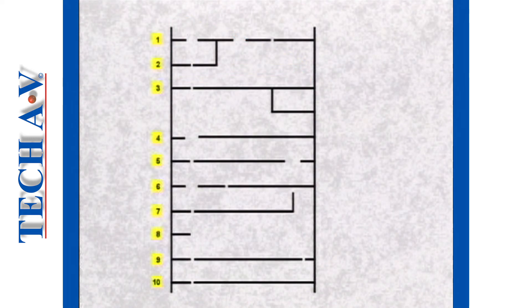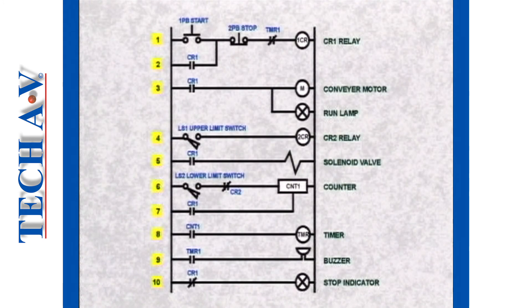These horizontal lines represent the rungs of the ladder, which illustrate how the various devices are wired together. And these symbols identify the devices used to create the control circuits.